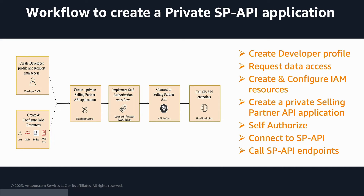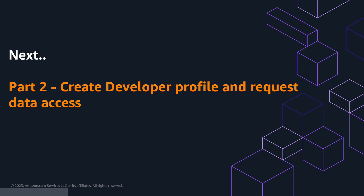Finally, we have calling SP API endpoints. Start calling different SP API endpoints. In the case of customers migrating from MWS to SP API, this will involve updating your application so that actions that previously called MWS operations will call the corresponding SP API operations. That covers the overall steps required to create a private SP API application. To see a detailed demo of each of these steps, watch the rest of the videos in this video series. In the next video, we will be covering step 1 and step 2, which is creating a developer profile and requesting data access.